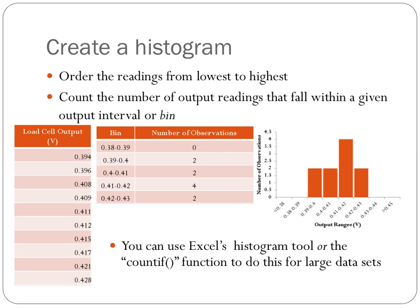To create a histogram, I'm going to take all the readings from my load cell and order them from lowest to highest. Then I'm going to decide on some ranges that are going to equally divide the outputs from our load cell. In this example, I've chosen a bin size or range size of 1/100th of a volt.